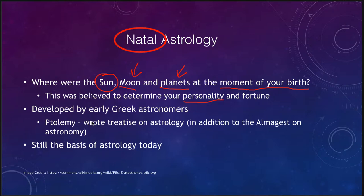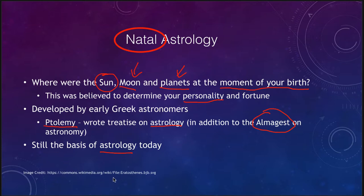The original astrology was much more complicated, looking at not just the position of the Sun but also the Moon and the planets, and those would all have an impact on your personality and your destiny. This was developed by the Greek astronomers. Claudius Ptolemy actually wrote a treatise on astrology as well. We talked about his Almagest, which explained the motions of the planets and how to predict those. Astrology today is still based on this work of Ptolemy, and at Ptolemy's time there was really little difference between astronomy and astrology.